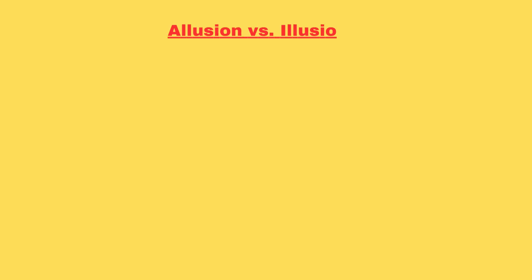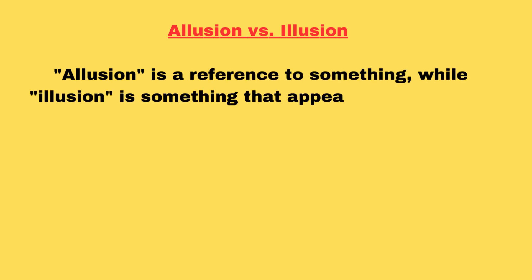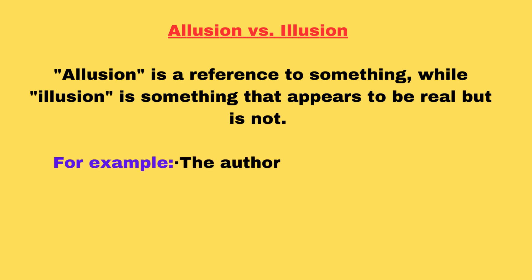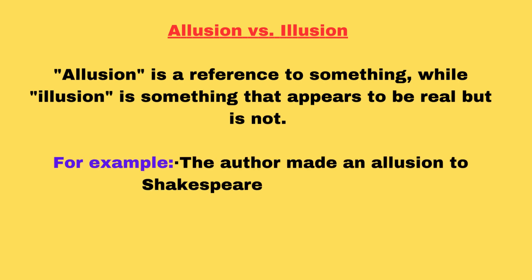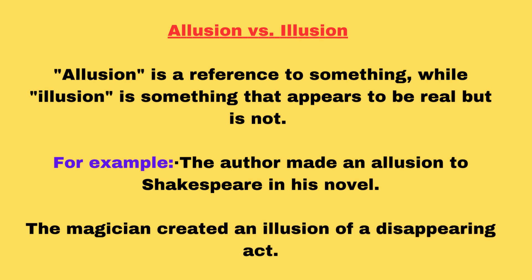Allusion versus illusion. Allusion is a reference to something, while illusion is something that appears to be real but is not. For example, the author made an allusion to Shakespeare in his novel. The magician created an illusion of a disappearing act.